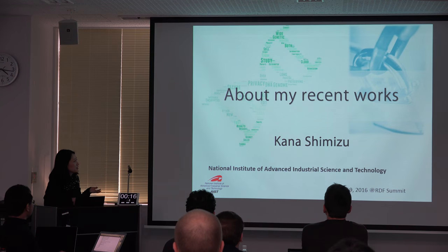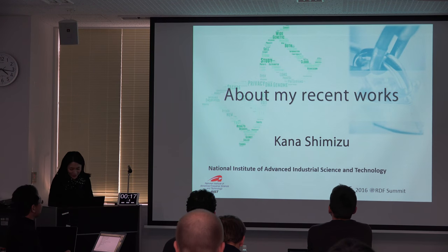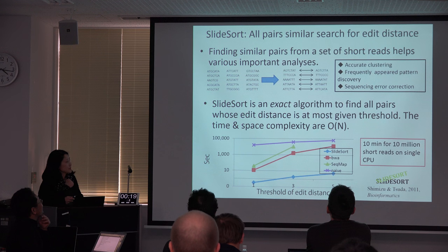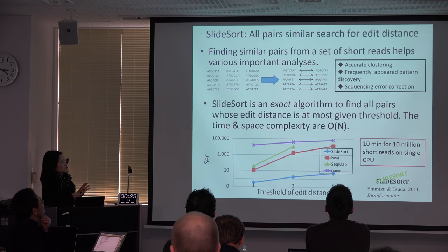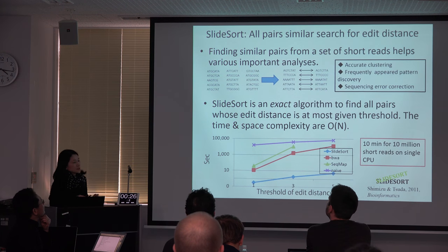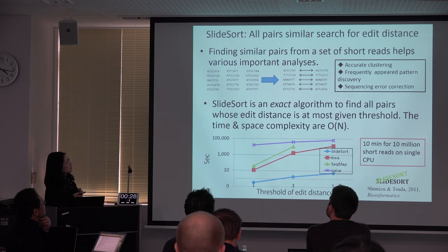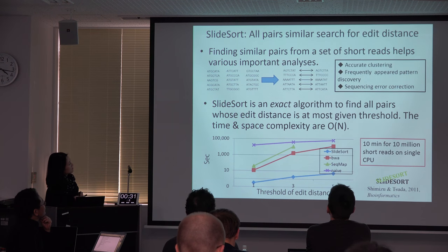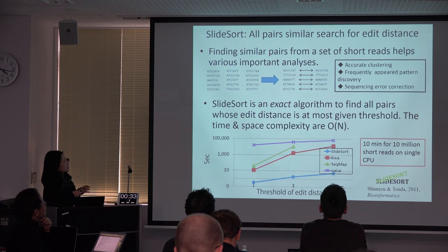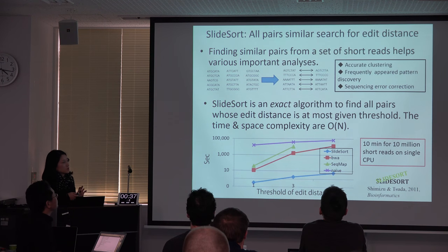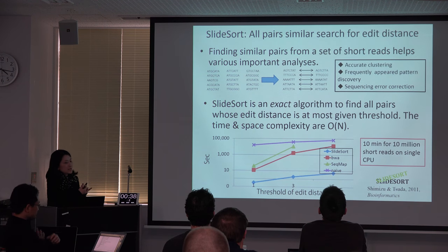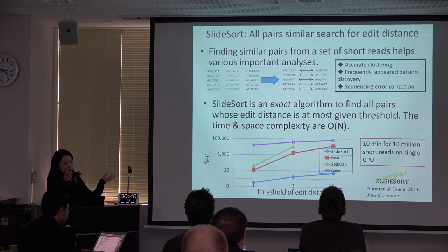I have two topics. The first topic is about analysis of next generation sequencing data. I've been working on analyzing NGS data, and almost five years ago I developed a method which is a linear time algorithm to find all similar pairs from a set of short reads.